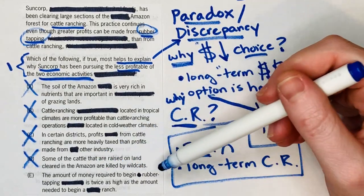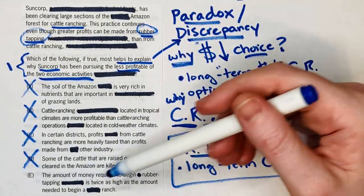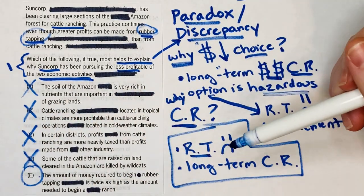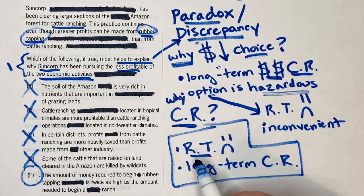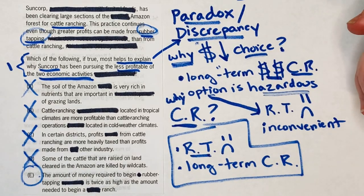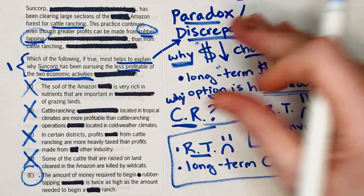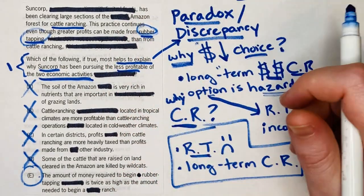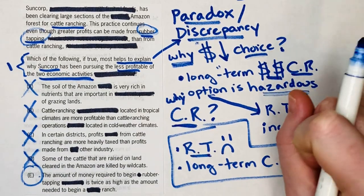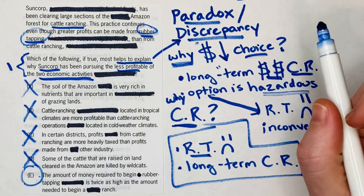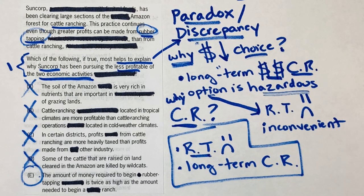Answer E says the amount of money required to begin rubber tapping is twice as high as the amount needed to begin a ranch. Ding ding ding — that's exactly what we want: a downside for rubber tapping. That is the correct answer to this paradox question. This is a great, easier-level question, but hopefully this scratch work inspires you to work a little harder on your own CR. If you have any questions about this question or CR strategy in general, feel free to ask them in the comments below.